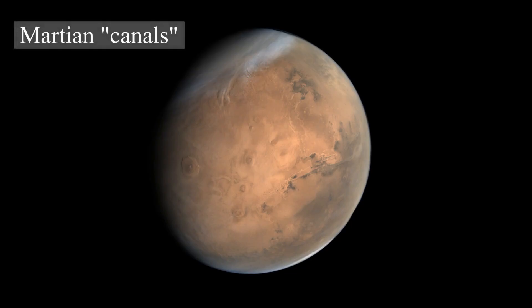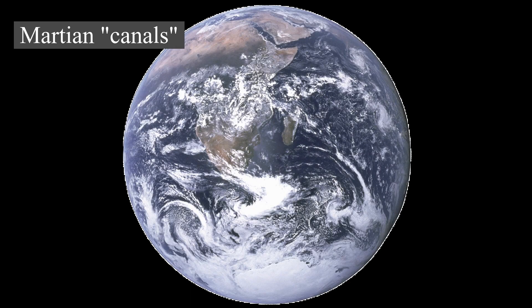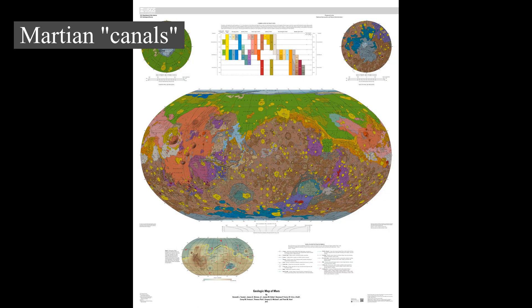By the 19th century, the resolution of telescopes reached a level sufficient for surface features to be identified on Mars. On 5 September 1877, a perihelic opposition of Mars occurred. Italian astronomer Giovanni Schiaparelli used a 22-centimeter telescope to produce the first detailed map of Mars. These maps notably contained features he called canali, which were later shown to be an optical illusion — supposedly long straight lines on the surface of Mars to which he gave names of famous rivers on Earth.